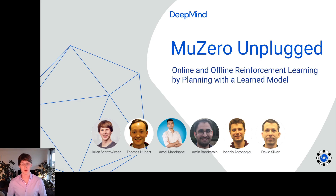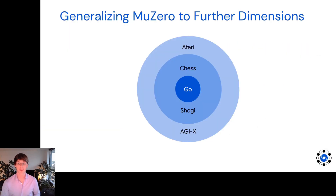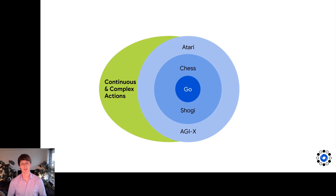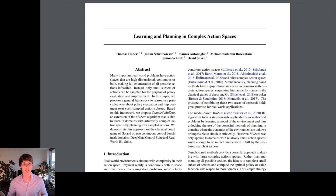This is joint work with my great collaborators. We've been working on extending and generalizing MuZero for a while to different environments, different challenges and dimensions. Most recently, we extended it to different action spaces — Learning and Planning in Complex Action Spaces — which we also use in this paper for the continuous action space in MuZero.